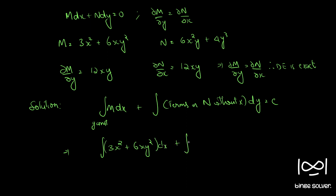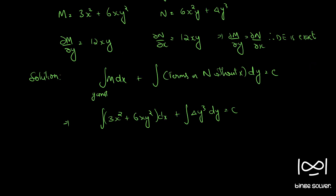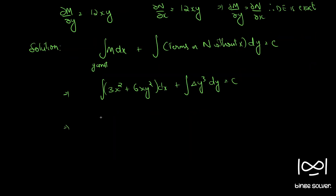Plus ∫(terms in N without x), which is just 4y³ dy, equals c. Integrating, we get x³ + 3x²y² + y⁴ divided by... giving us the integrated terms.